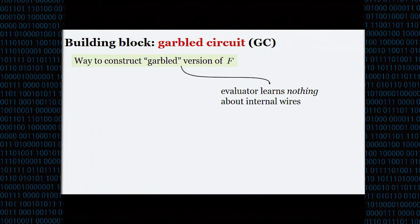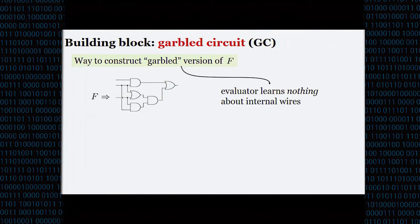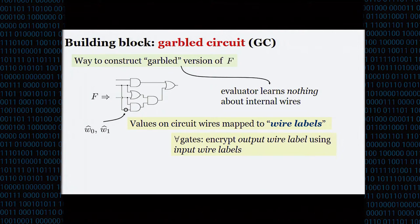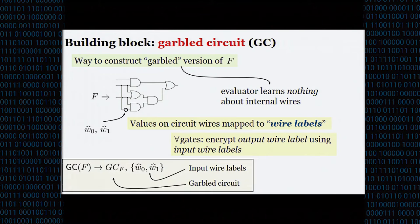A garbled circuit is essentially a way of constructing a garbled version of some function f such that a party evaluating this garbled circuit shouldn't be able to learn anything about any of the internal values. We'll view f as a Boolean circuit and assign two wire labels to each wire — random values where one wire label denotes the zero bit and the other denotes the one bit. We go through all the gates and do an encryption procedure that encrypts the appropriate output wire label using the appropriate input wire labels. When evaluating, the evaluator decrypts the appropriate output wire labels and feeds them into the next gate. Formally, a garbling procedure takes some function and outputs a garbled circuit and a set of input wire labels.